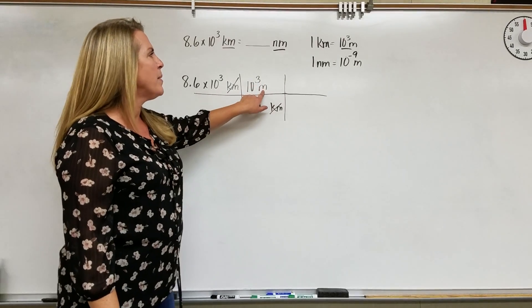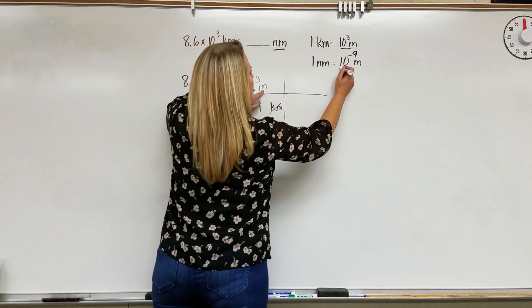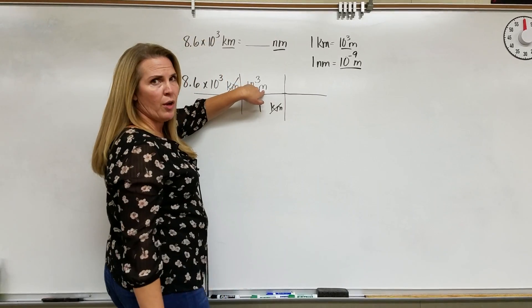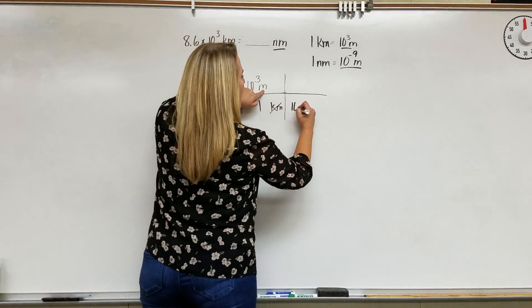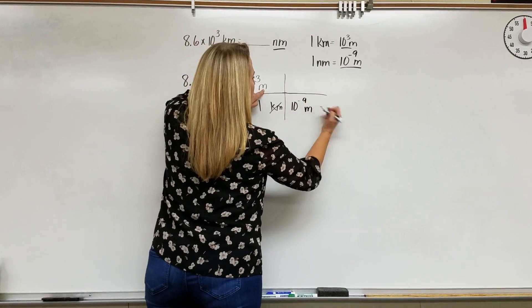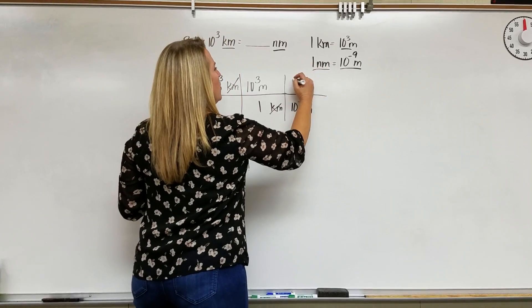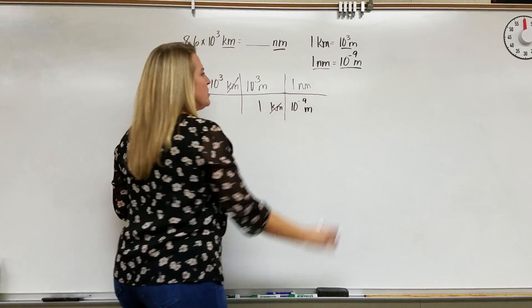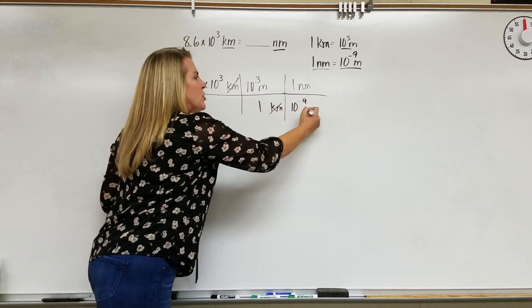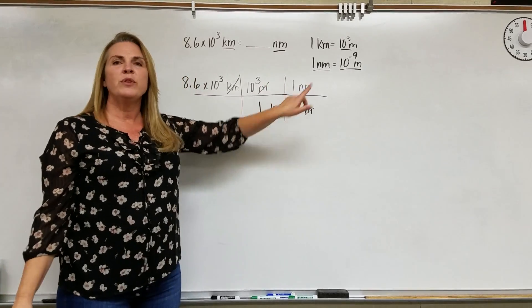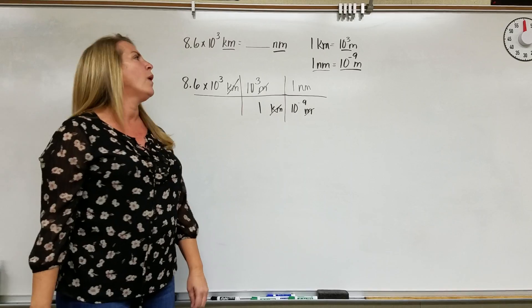If I have meters upstairs, and I'm going to use my next relationship, I want meters to go downstairs. So we'll put 10 to the minus 9 meters downstairs, and right above it will go our 1 nanometers. Our meters unit will cancel, and now the only unit we have left is nanometers, which is what we're looking for.